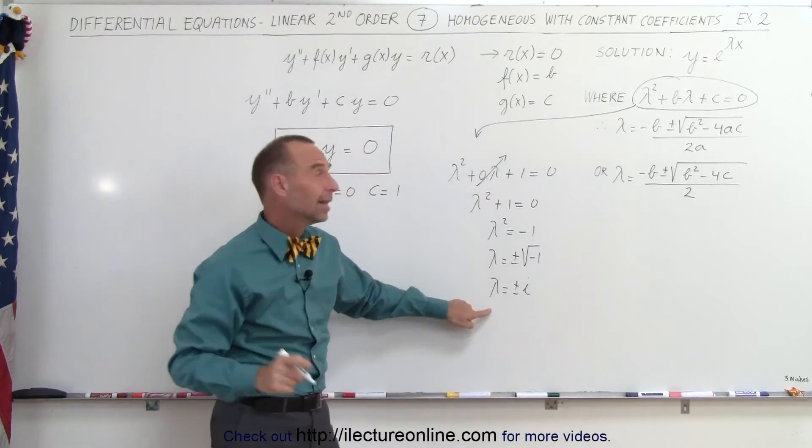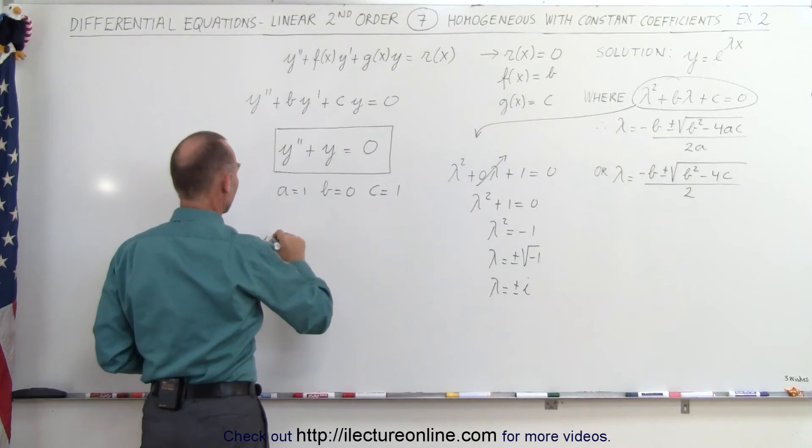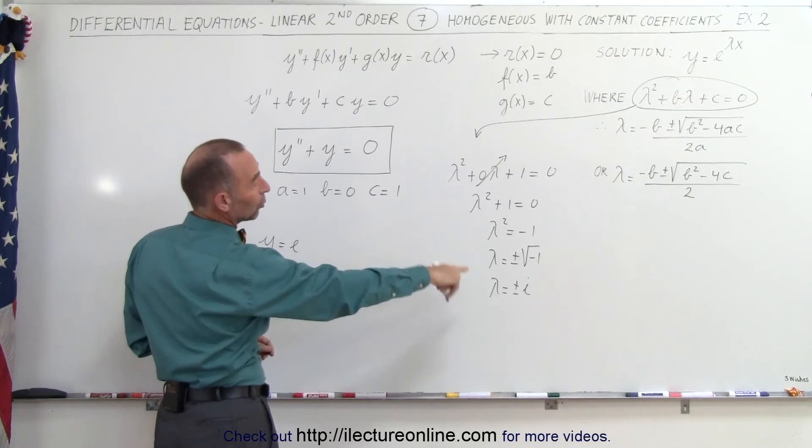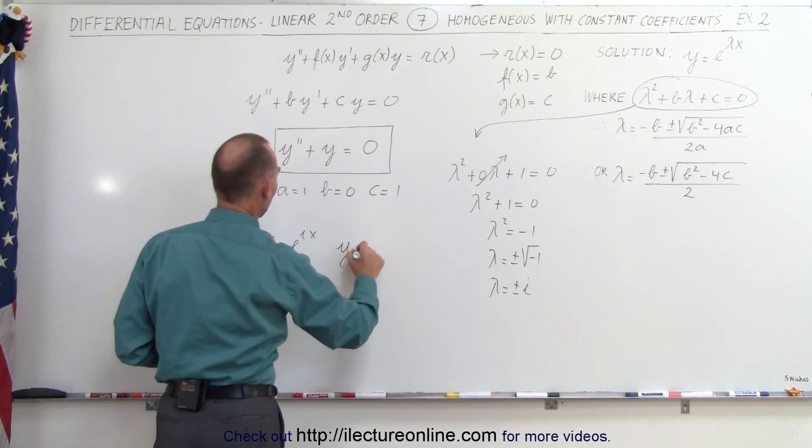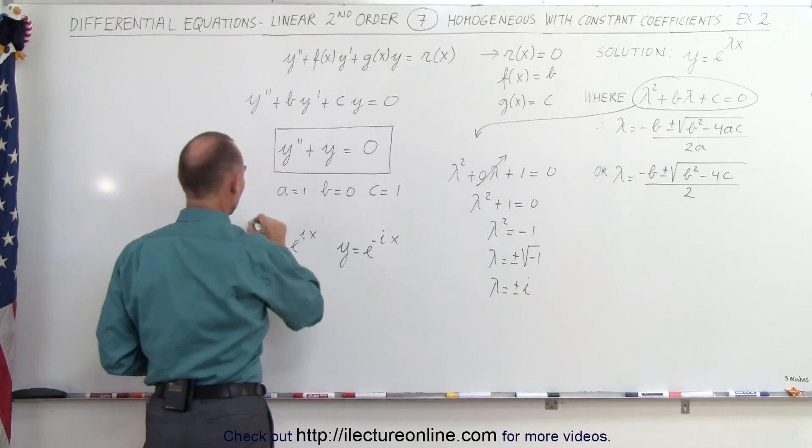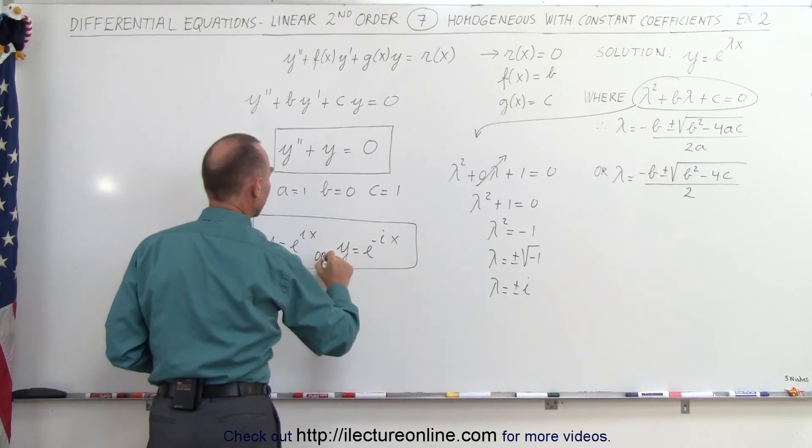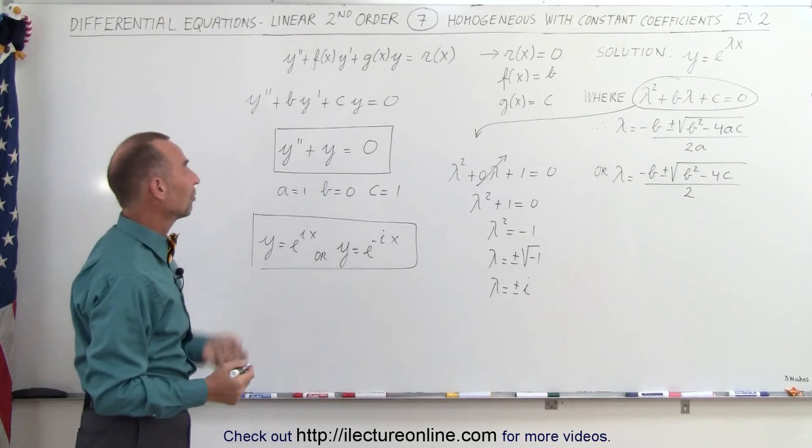So if we plug that then into our exponent right here, we then end up with the two solutions. We have the first solution, y is equal to e to the i times x, and the second solution is y is equal to e to the minus i times x. And so these then become the two solutions. Either one would work. Here are the two solutions to this differential equation.